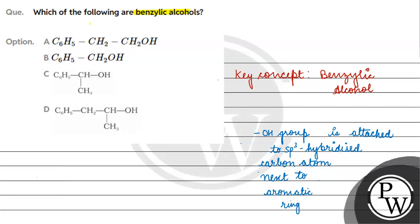Aromatic ring के बगल में जो SP3 hybridized carbon होगा, उससे जुड़ा हुआ OH बनाता है benzylic alcohol. तो पहला benzylic alcohol यह हुआ हमारे पास. दूसरे क्या possibility है? यहां पर तो primary था.